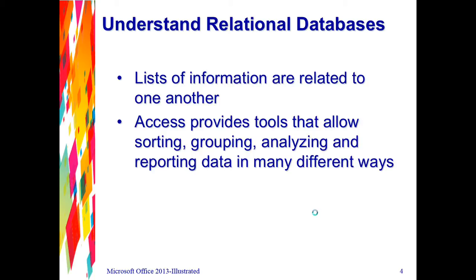When we're talking about a relational database and relationships, we're talking about how information is similar — what information in one list is similar to information in another list. Could it be a customer name, a customer number, or an item number that was ordered? That's what Access provides us tools for — how data is tied together.